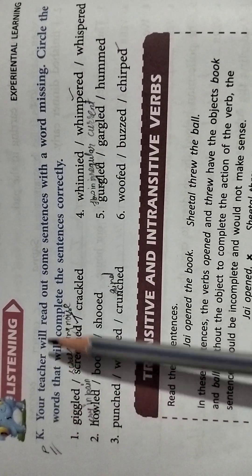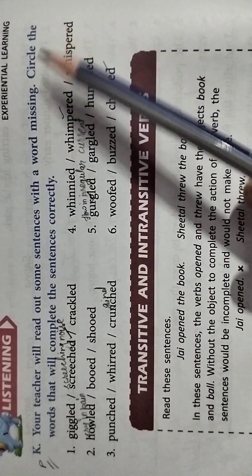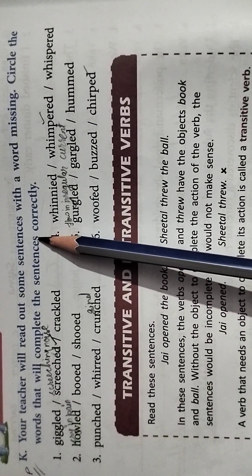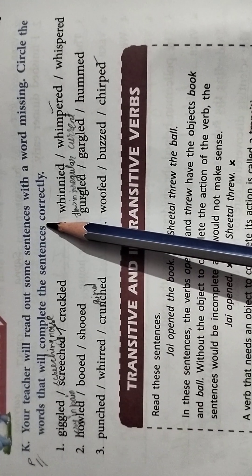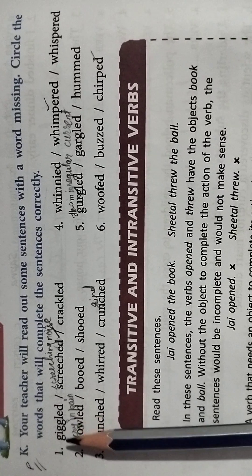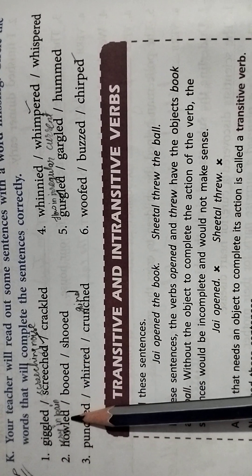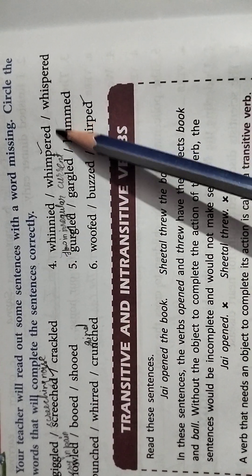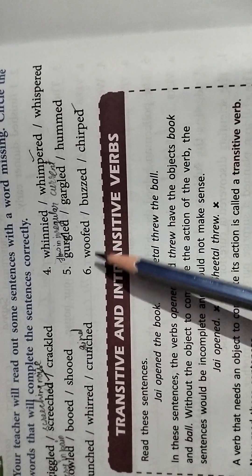In exercise number P, your teacher will read out some sentences with a word missing. Circle the words that will complete the sentences correctly. The help box is given on page number 151, so read that carefully and then choose your answer. In first — strange sound; second — howl sound; third — crunched; fourth — whimpered; fifth — gurgled sound; and in last — chirped sound.